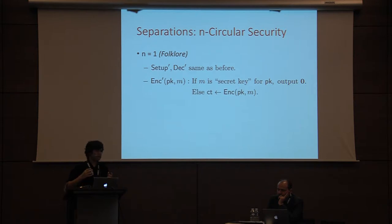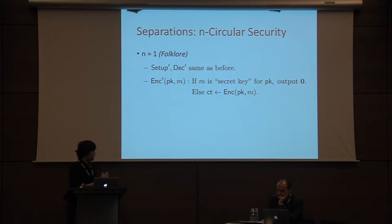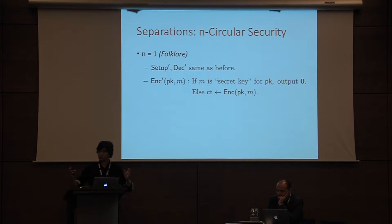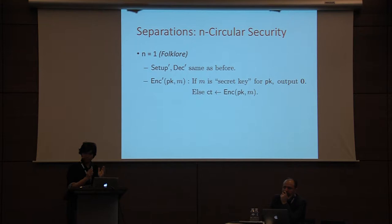In that case we have a folklore counterexample. What you do in encryption is check if the message you're trying to encrypt corresponds to the secret key for the public key you're encrypting under. If that's the case, you output some special string zero; otherwise you honestly compute the ciphertext. So if you get an encryption of the secret key itself, it's a special string, and you can clearly distinguish this from any other ciphertext.